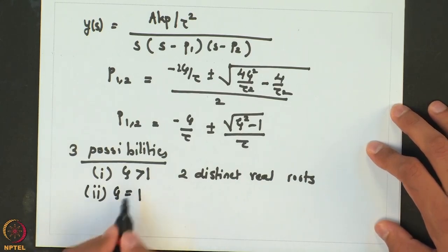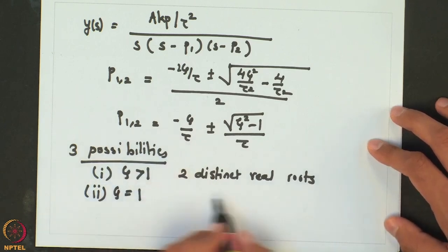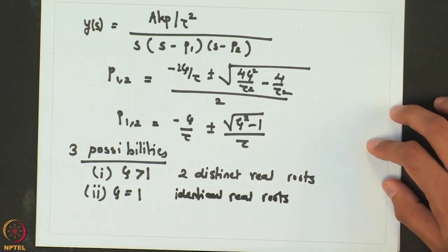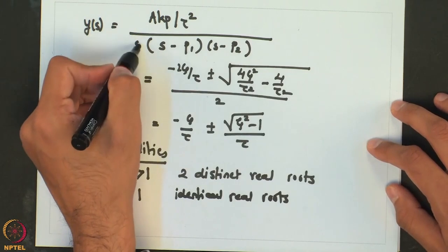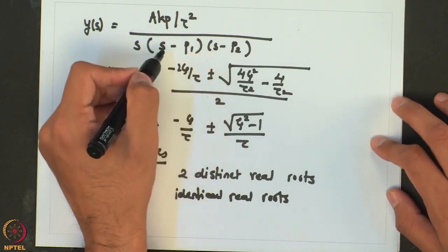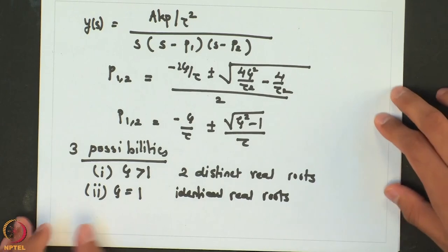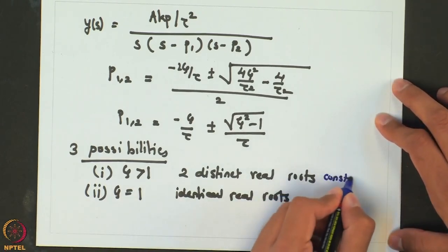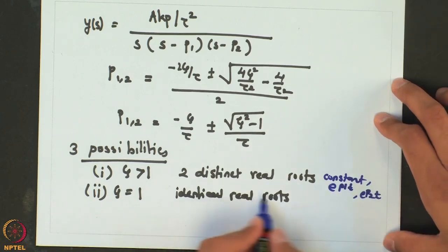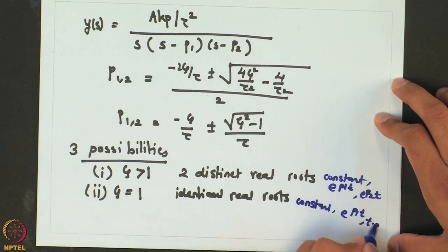When zeta equals 1, this square root term goes away and both roots are identical. In that case, we cannot directly write A over S plus B over p1 plus C over p2. We must use a squared term as well, and the response would then have a constant, e to the p1 t, and t times e to the p1 t terms.